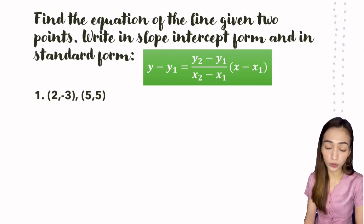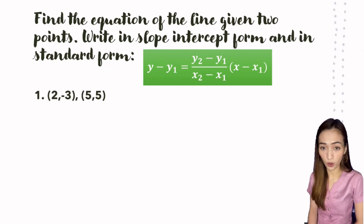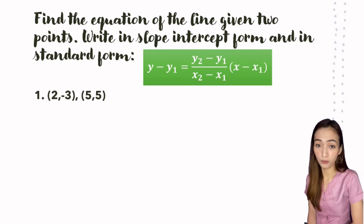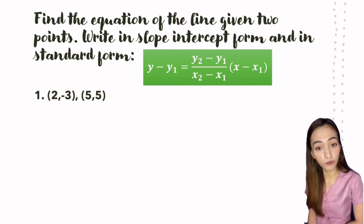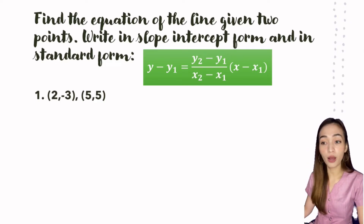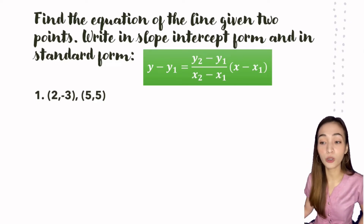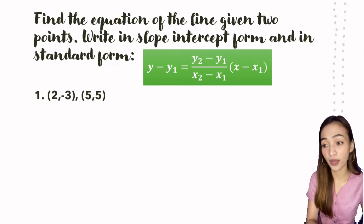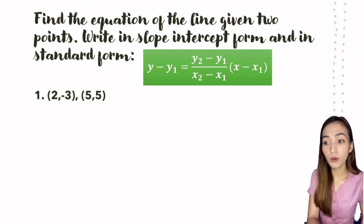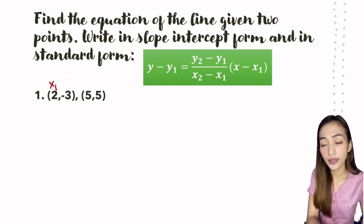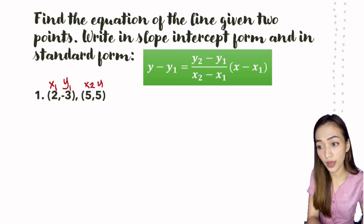What we're going to do is substitute the values of y-sub-2, y-sub-1, x-sub-2, and x-sub-1 into the formula. In number 1, we have the given two points: (2, -3) and (5, 5). So here, x-sub-1 is 2, y-sub-1 is -3, x-sub-2 is 5, and y-sub-2 is 5.